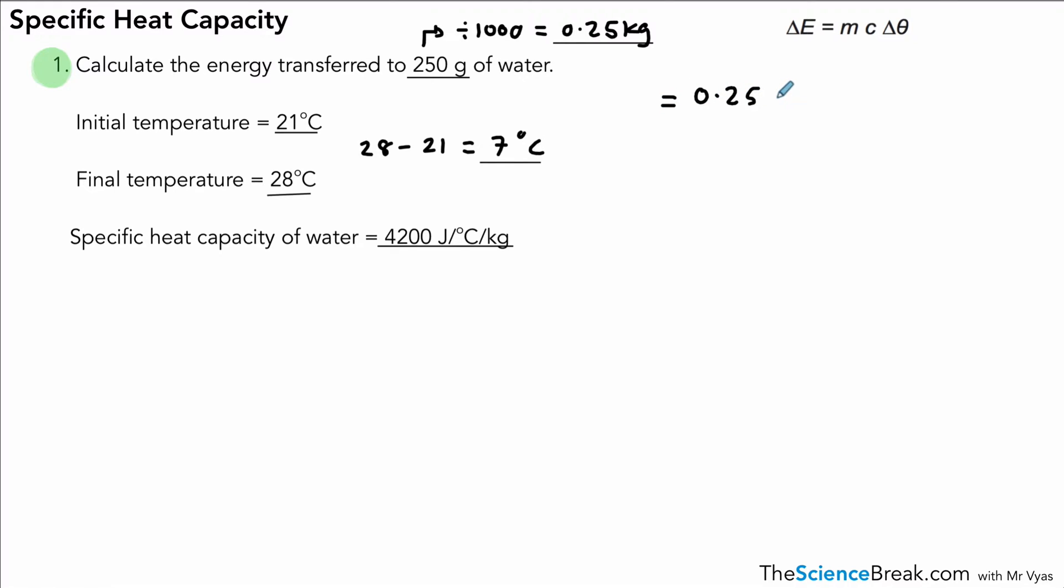So now we can go ahead and use our equation. So the energy transferred is 0.25 times 4200 times a temperature rise of seven, and that will give us an answer of 7350 joules, or 7.35 kilojoules.